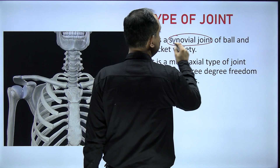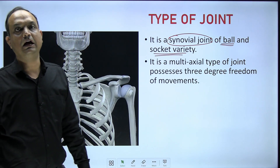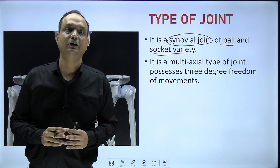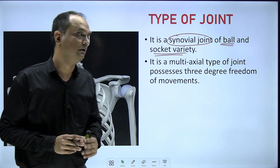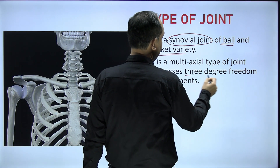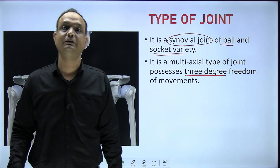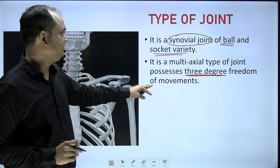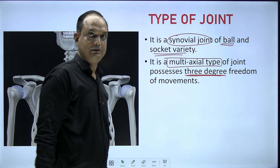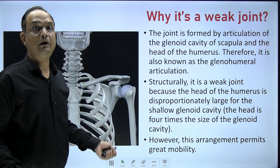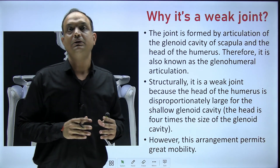The shoulder joint is a synovial joint, and within the synovial variety it is a ball-and-socket type. Ball-and-socket joints are highly movable joints known as diarthrosis joints — freely movable with freedom of movement in all three degrees. That means you can move the upper limb in x, y, and z axes — all three dimensions — making it a multiaxial type of joint.